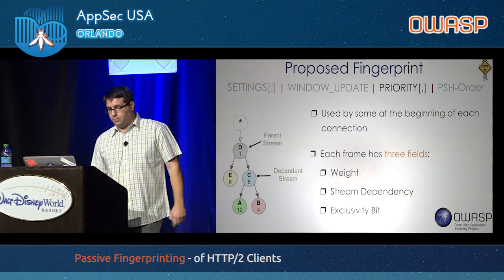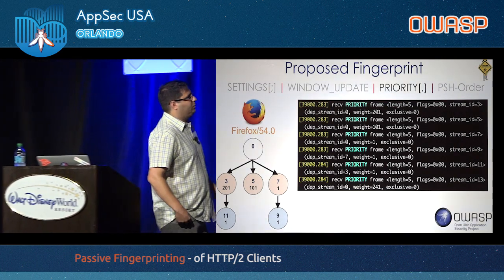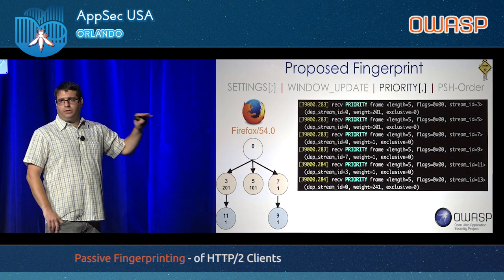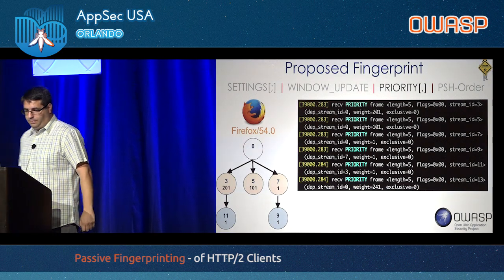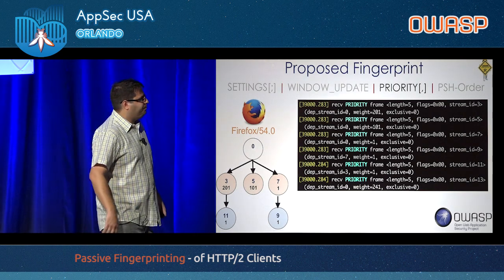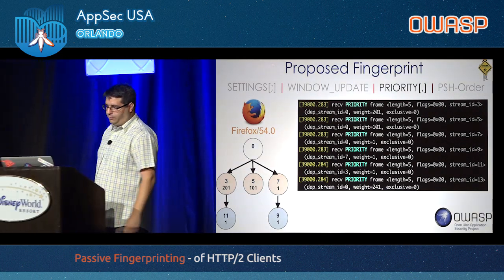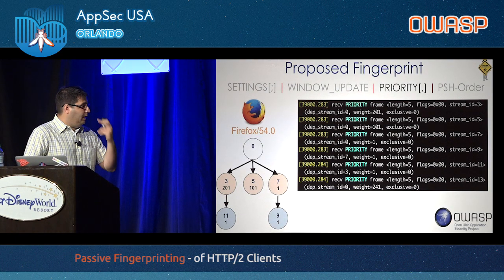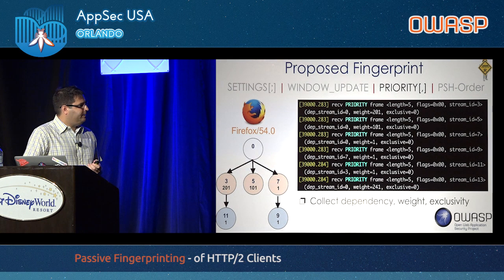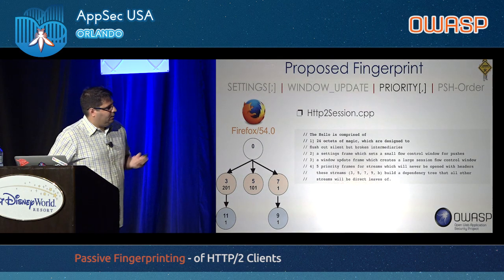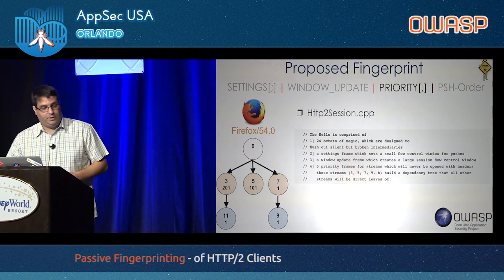Here's an example from Firefox. Upon initiating a connection, Firefox always creates a tree structure with three main streams numbered three, five, and seven — remember, client-initiated streams are always odd. Stream number three has a weight of 201, making it a high-priority stream; stream five has weight 101, and so on. We looked at the Firefox source code and confirmed this is hard-coded — this is what Firefox does every time it establishes an HTTP/2 connection.